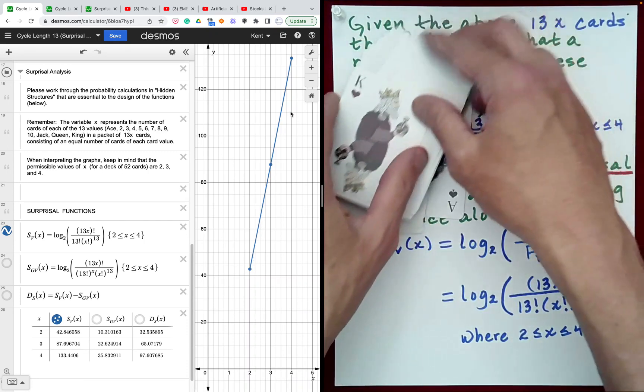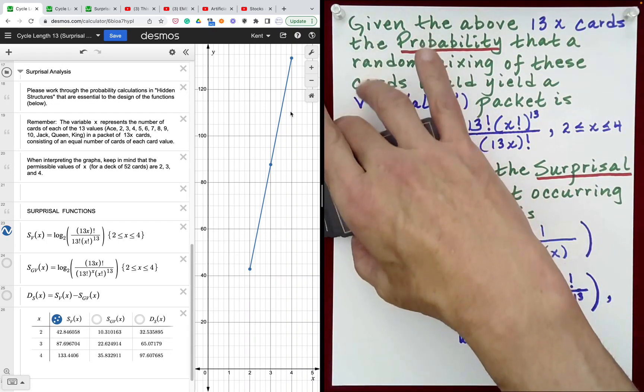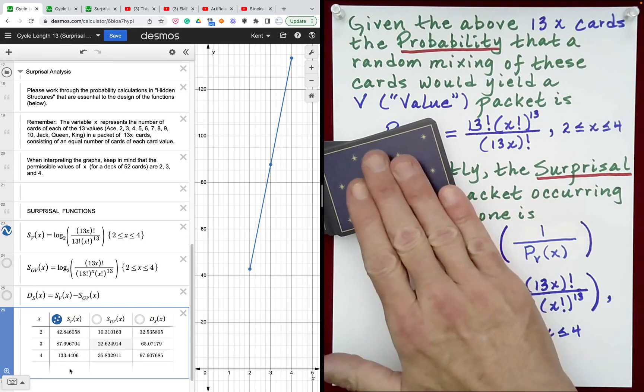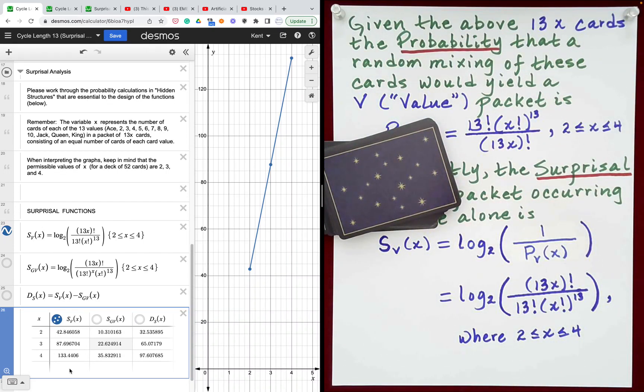This is a cyclic structure with cycle length 13. As built right here, the surprisal value of this particular structure is off the charts, as you might imagine. It is 133 bits of surprisal. This surprisal value is similar to the surprisal value associated with being struck by lightning seven times throughout your life. That's how likely it is that we would randomize a deck of cards and find that it has a structure where it cycles through all 13 card values perfectly. Not very likely.